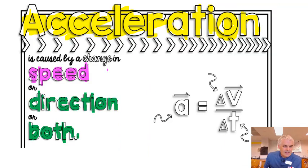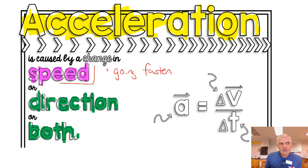So what's acceleration? It's caused by a change in speed. Now, what does that mean? Going faster, right? So you're going 10 miles an hour, and then soon you're going 20, and then 30, and then 40 miles an hour. That's a change in your speed.